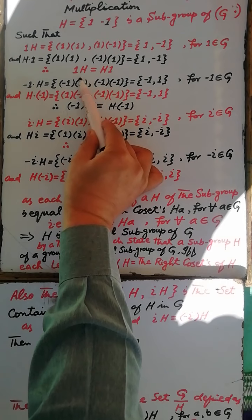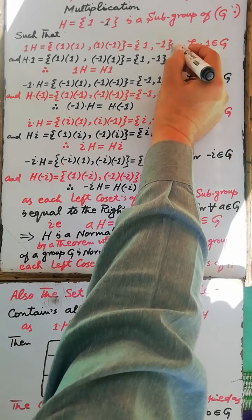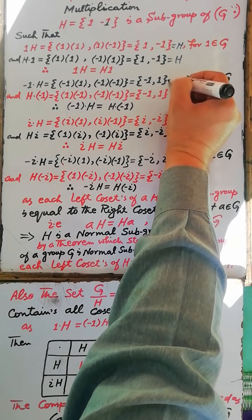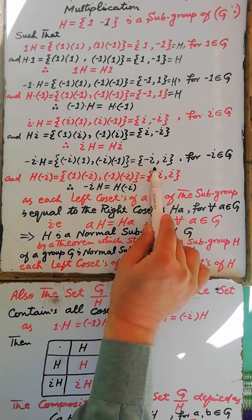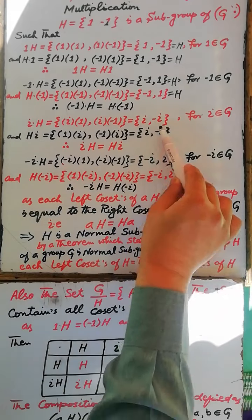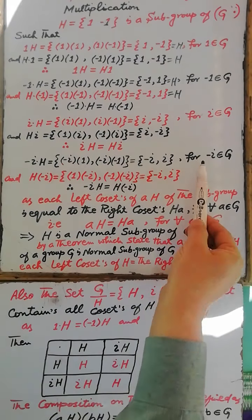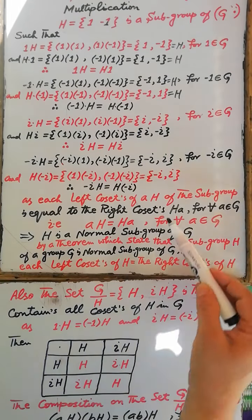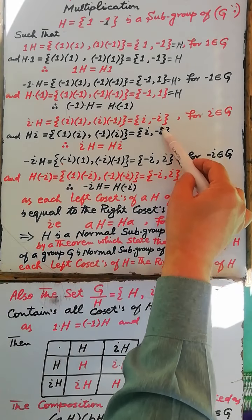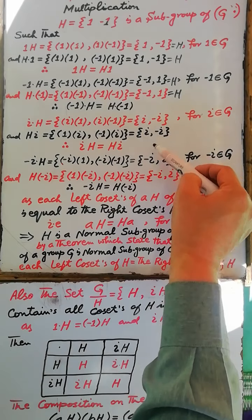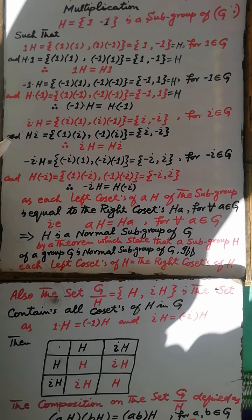The left coset 1H and the left coset (-1)H are the same, and both are equal to the subgroup H itself. The left coset determined by element iota is equal to the left coset determined by element -iota. These two cosets are the same. Therefore, collecting all distinct cosets determined by the elements of the group G, we have H and iota·H, because iota·H and (-iota)·H are the same.